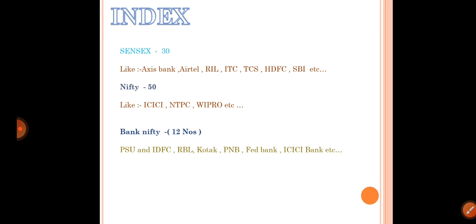Nifty means having 50 members like ICICI, TCS, Wipro, etc. — it is called Nifty 50. Bank Nifty has around 12 members like PSU banks, IDFC, RBL, Kotak, Punjab National Bank, Federal Bank, ICICI Bank, etc. — it is called Bank Nifty. So the index has three main types.